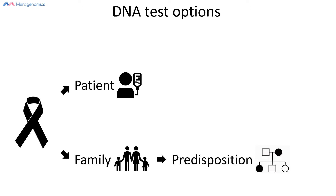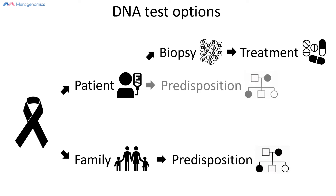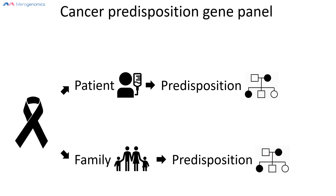When it comes to patients, there are a number of different options. A cancer biopsy can be tested — the primary purpose of this is to select treatment options. Cancer patients can also undergo predisposition testing, and they can analyze the genetic material they were born with for treatment selection. This latter test is specifically referred to as a pharmacogenetic test, and we'll contrast that with treatment selection based on biopsy testing, which we'll refer to as targeted therapies.